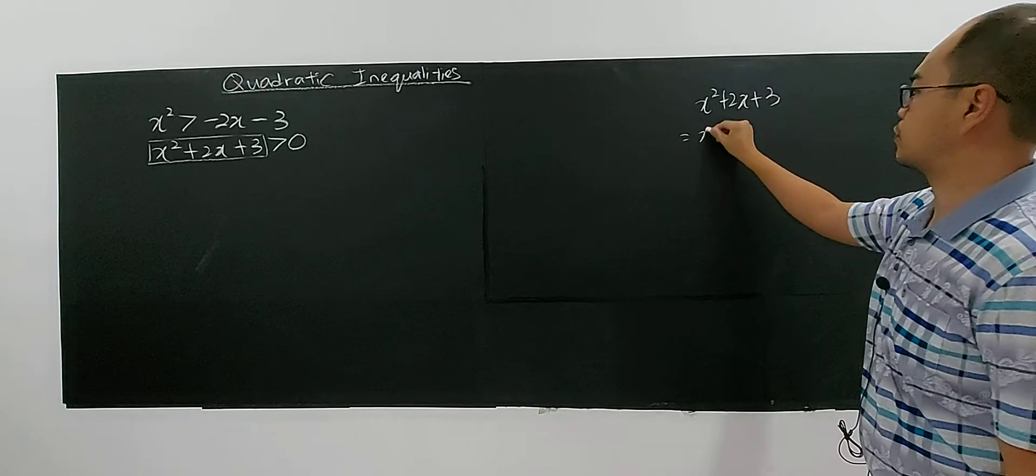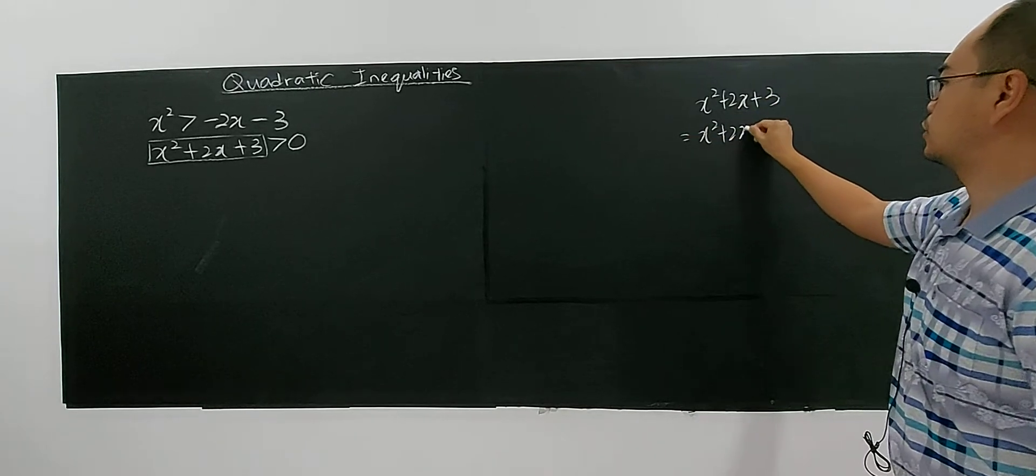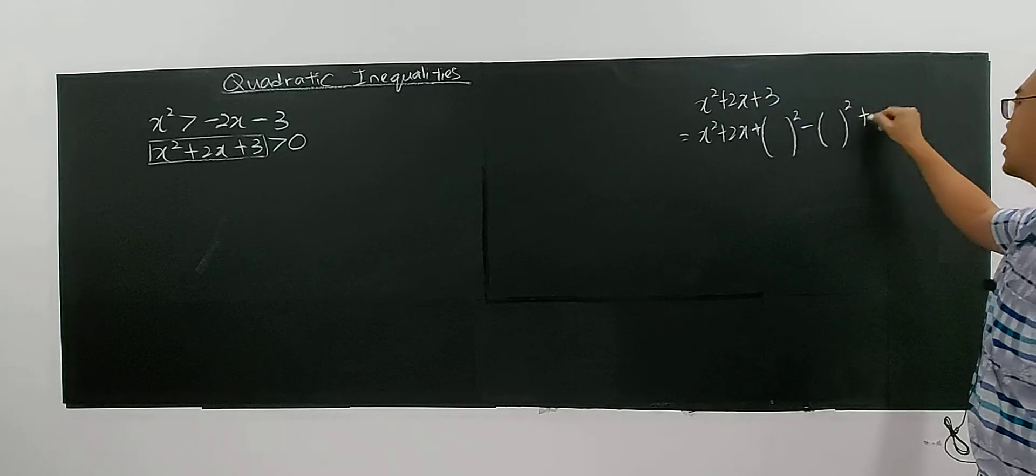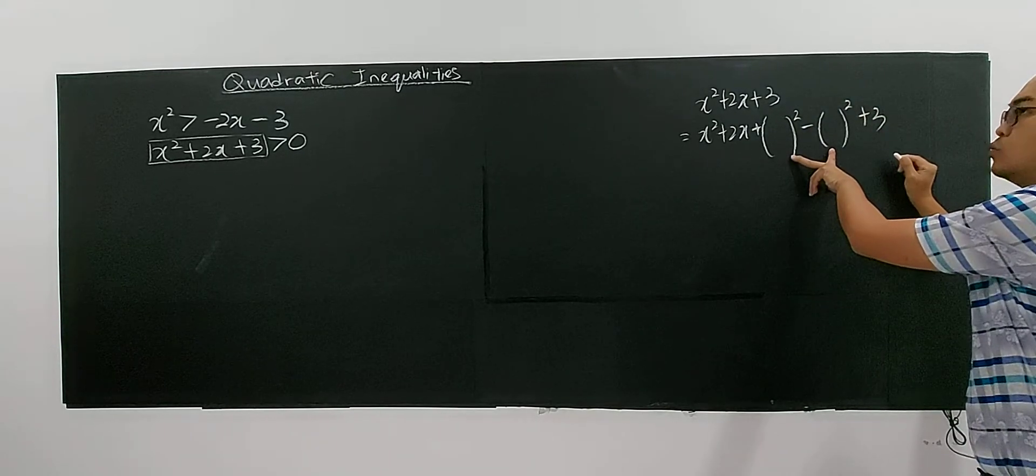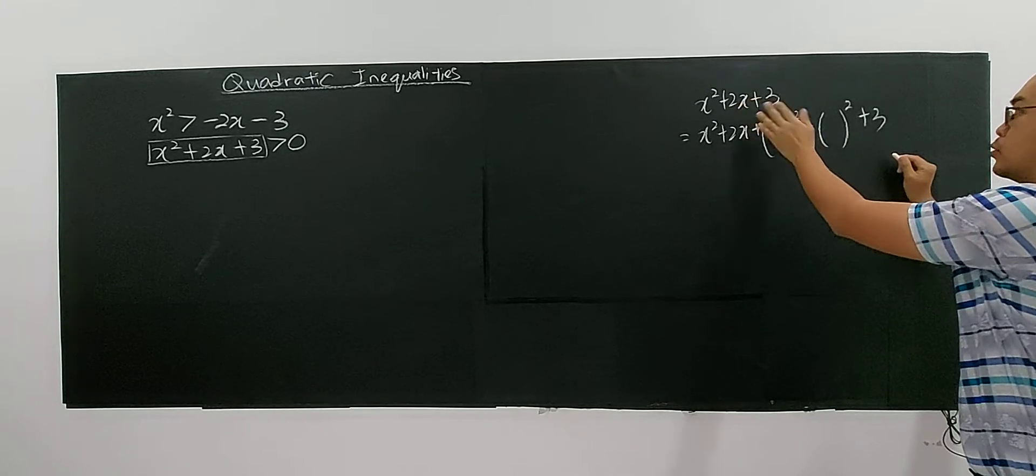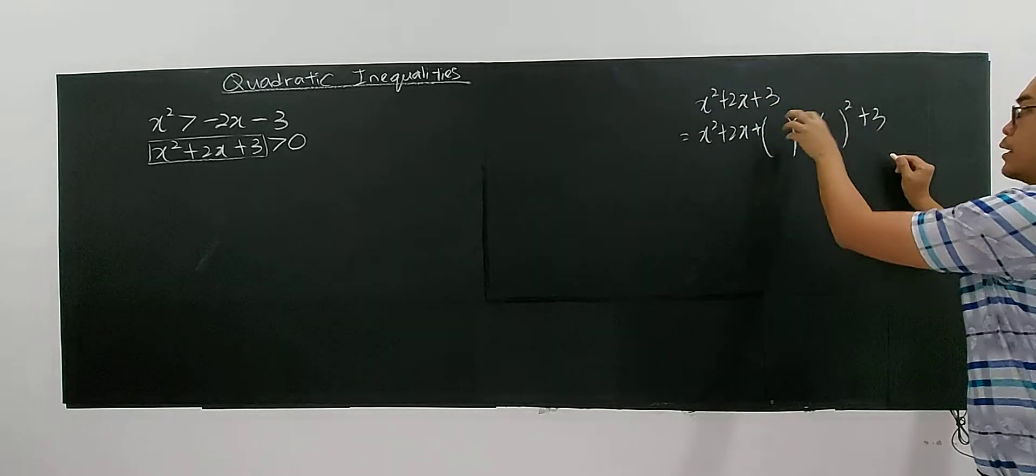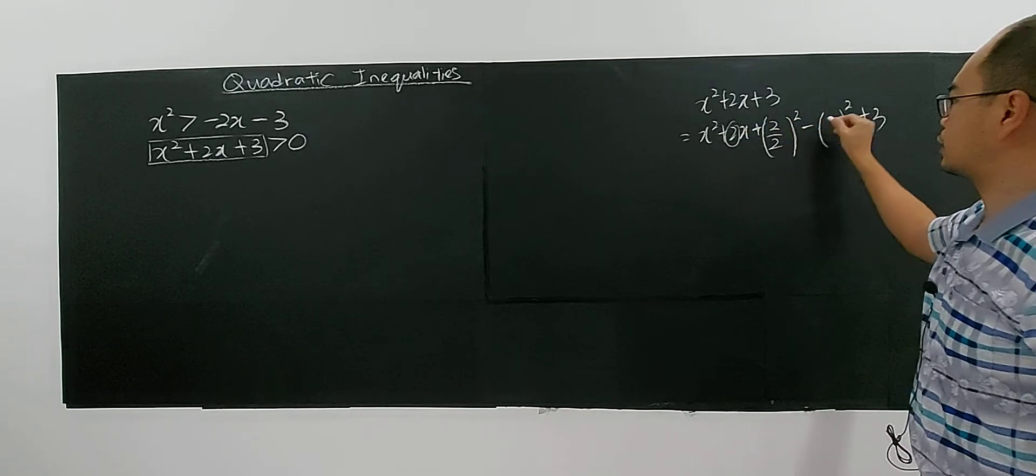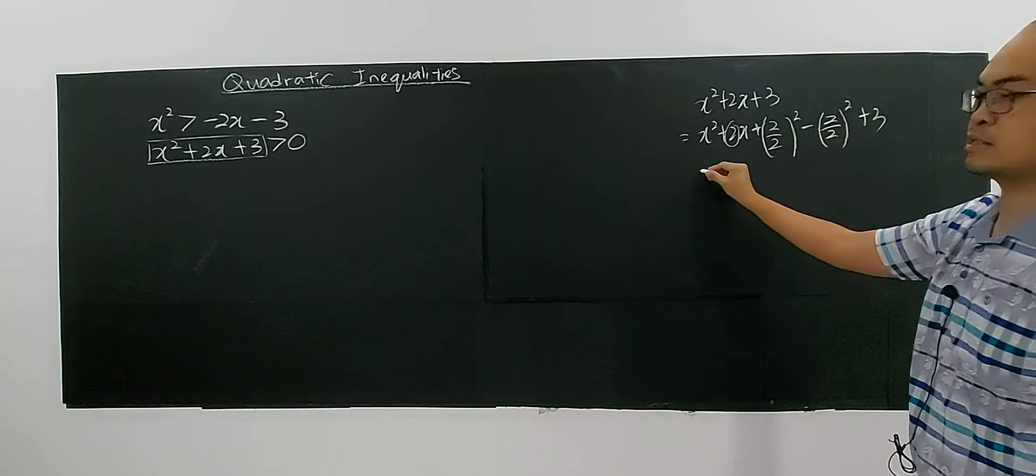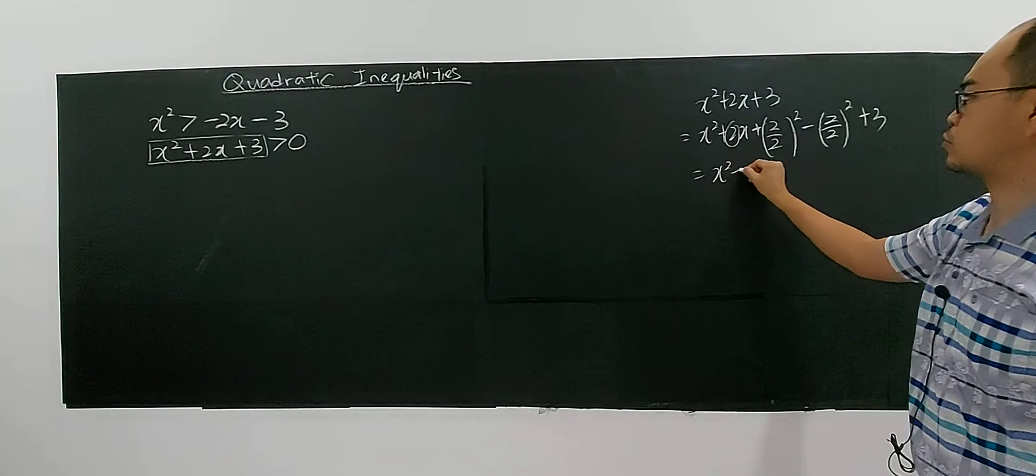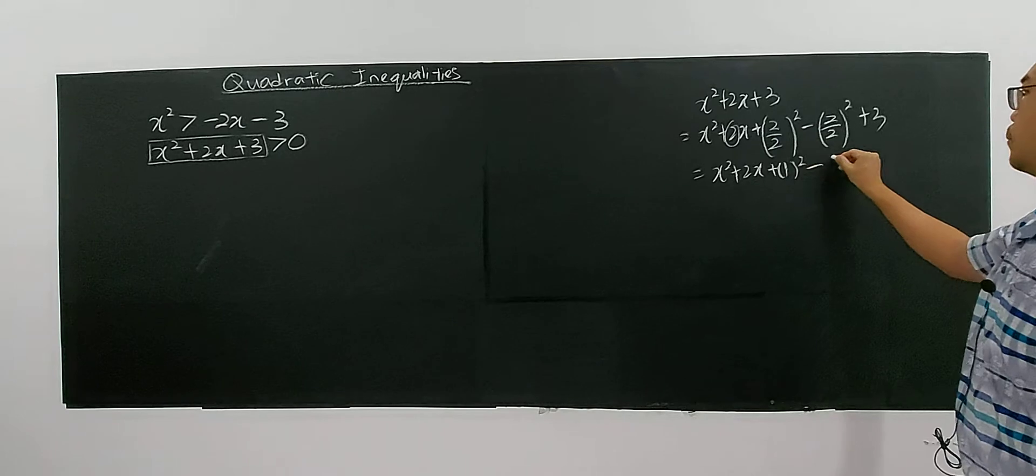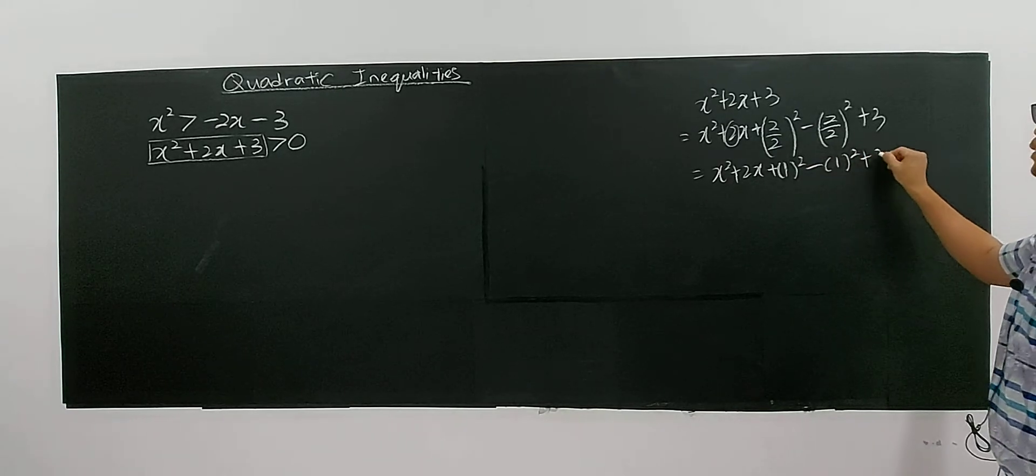For completing the square, very simple. Remember, you just write x square plus 2x. Add another 2 bracket, which is not supposed to be there, because once you minus this 2, it's the same thing, and you get 0. You will still get back the same thing. Now I add it back. What is the term here? I take the b divided by 2. Then you have x square plus 2x plus 1 power of 2 minus 1 power of 2 plus 3.